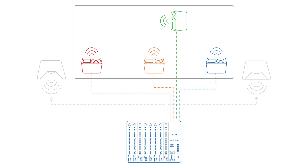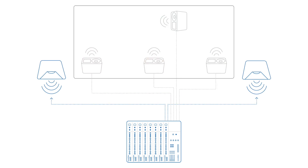So if we're mixing both monitors and the main speakers from the same console, using aux post doesn't work very well. Because if we change the EQ or adjust the faders for the main mix in the room, this is also going to affect the aux sends, which we are using for monitors. This is why when mixing monitors from the same console as the main speakers, it is best to use aux pre.